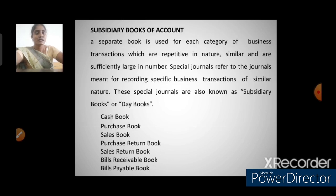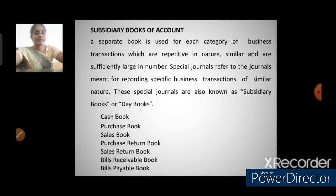Next, subsidiary books of accounts. Separate books of accounts are used for each category of business transactions that are repetitive in nature, similar, and sufficiently large in number. If transactions are large in number, a separate book is prepared for each category based on the nature of the account. These special journals, used for recording specific business transactions of a similar nature, are known as subsidiary books or day books. Examples include: cash book, purchase book, sales book, purchase return book, sales return book, bills receivable book, and bills payable book.